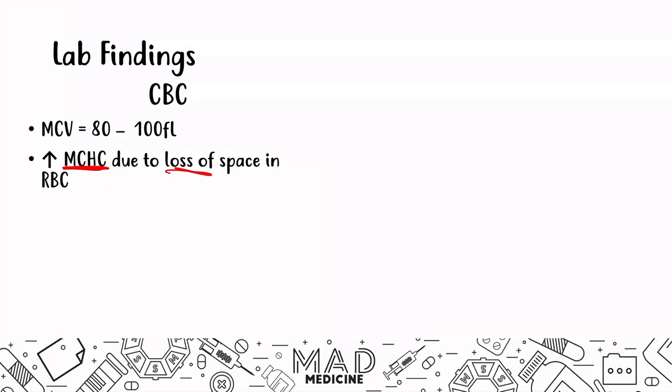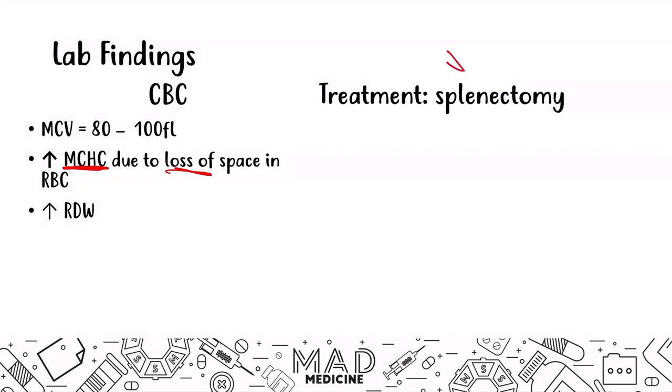How do you treat hereditary spherocytosis? Luckily, there is a very simple treatment, because the person is going to be functioning normally — you're not going to have decreased oxygen being transported to the patient's body. It's just the fact that the red blood cells are being broken down in the spleen because they're not in the right shape. So what you do is you just get rid of the spleen — the treatment is going to be a splenectomy.